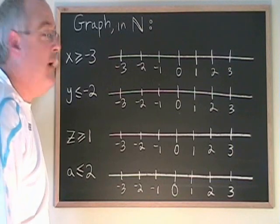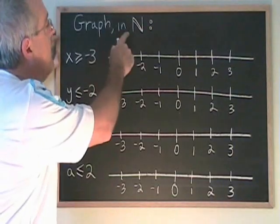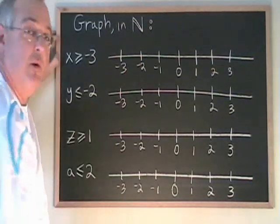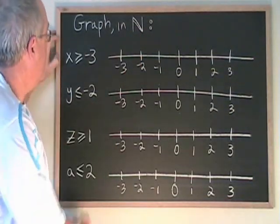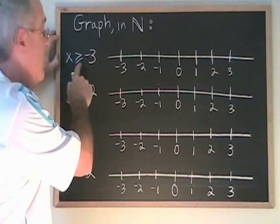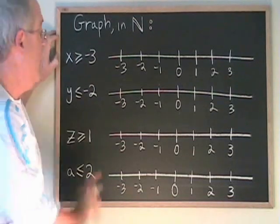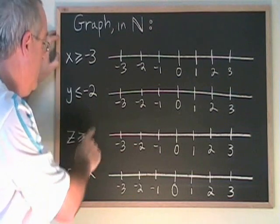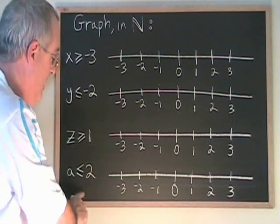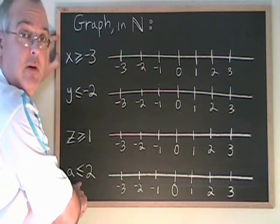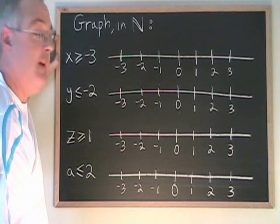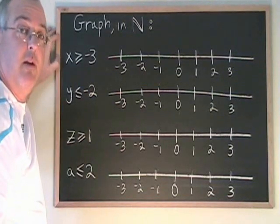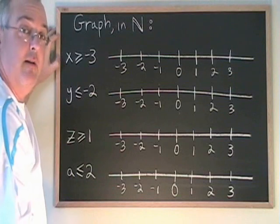Now, here we are being asked to graph within natural numbers the following equations. All of these equations are inequality symbols with the extra little line under them. They are greater than or equal to, less than or equal to, greater than or equal to, less than or equal to. You have to pay careful attention to whether or not that little line is there when you're reading the equation, so that you can be sure to get your answer right.